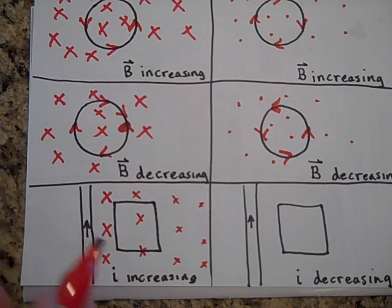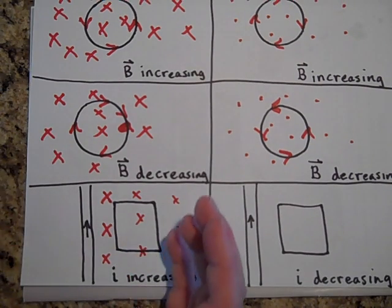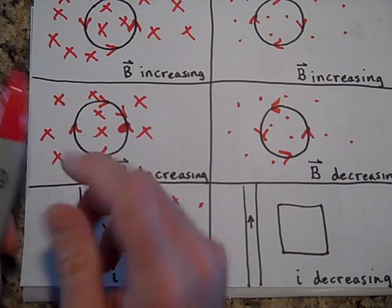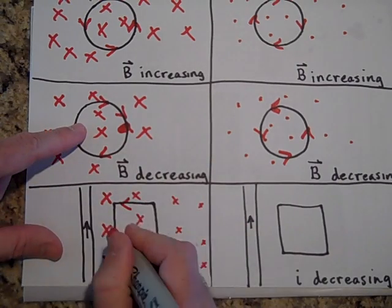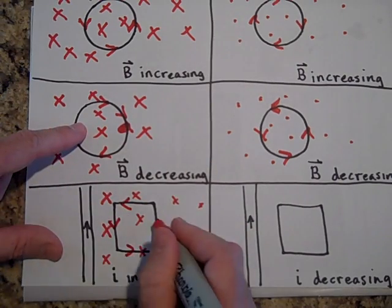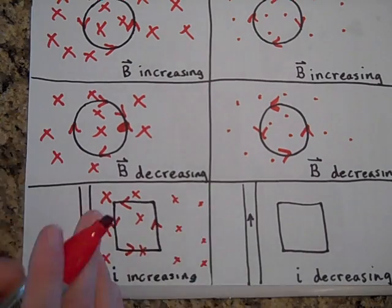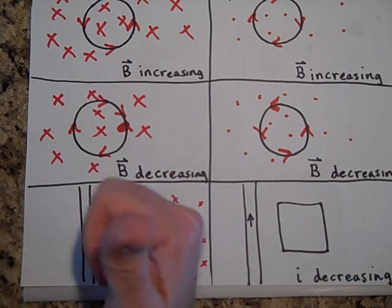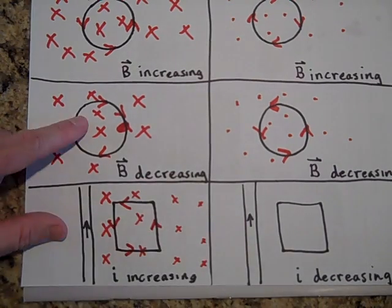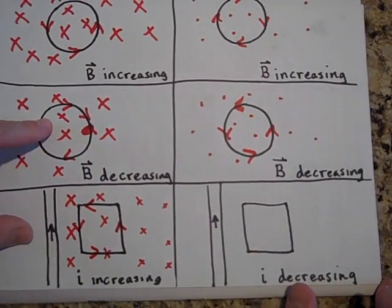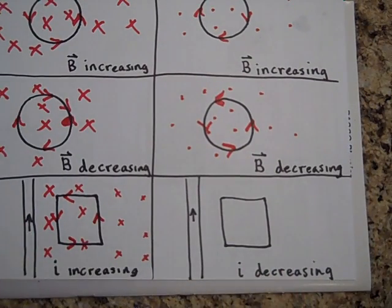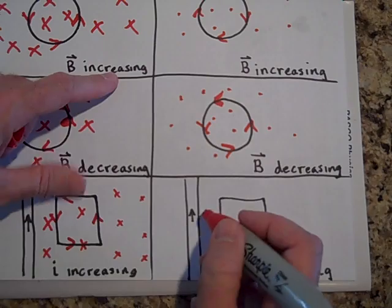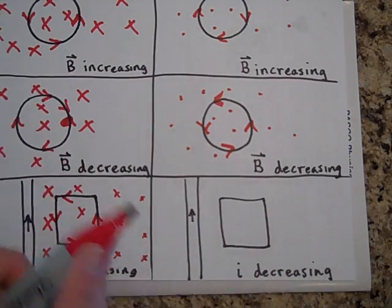And to make its own dots, it's going to make the current go this way. Last one for this video: if I is decreasing — we have a field going into the page, so these are x's, but they're dropping off as you go out.